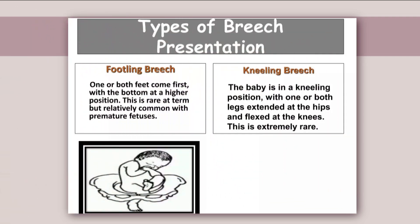In footling breech, one or both feet come first with the bottom at a higher position. This is rare at term but relatively common with a premature fetus. In kneeling breech, the baby is in a kneeling position with one or both legs extended at the hip and flexed at the knees. This is an extremely rare case.